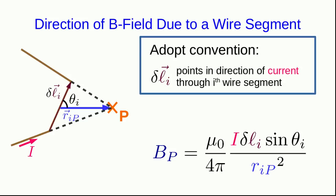You can probably guess there's going to be a cross product involved because we're combining two vectors, delta L and R_iP, and getting a new vector B, and the new vector B is going to be at right angles to both of them. And we've already seen that there's a sine of an angle, and so these are all clues that there's a cross product.